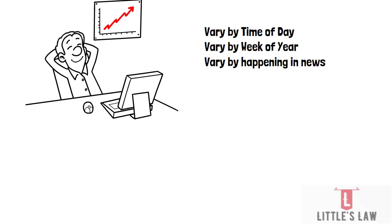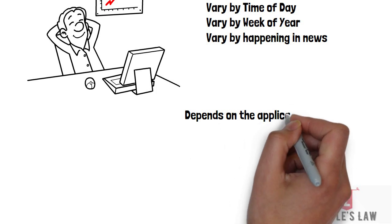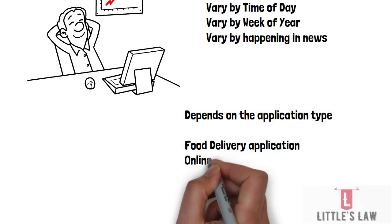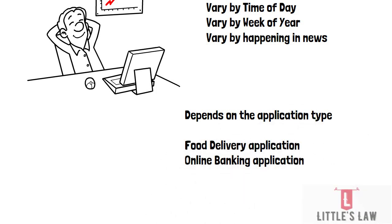For example, a food delivery site may have a modest steady load during the day, with a ramp up toward the close of business as people remember they need to cook dinner, and then a super high steady peak load during the week leading up to weekends.